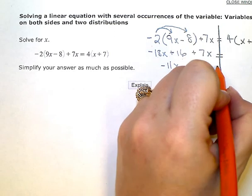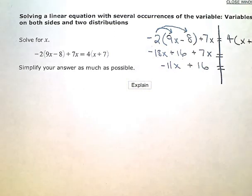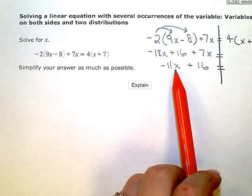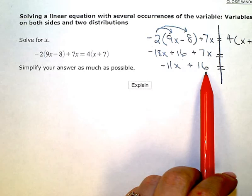So I've distributed, I've combined like terms. I can't go any further simplifying this side right now. This is a variable term, this is a constant term, they are not like terms so I have to just leave it for now.